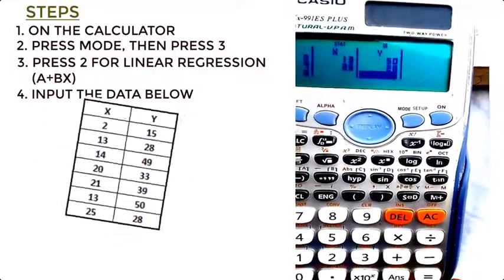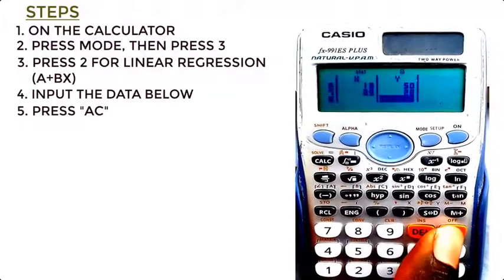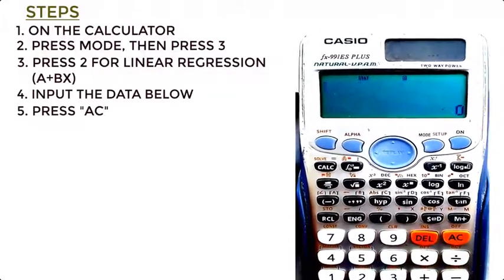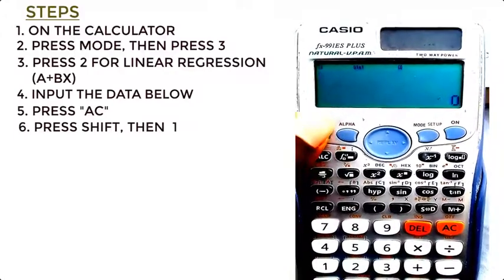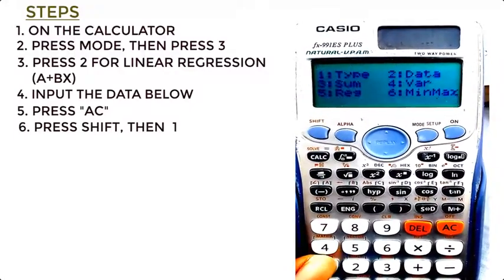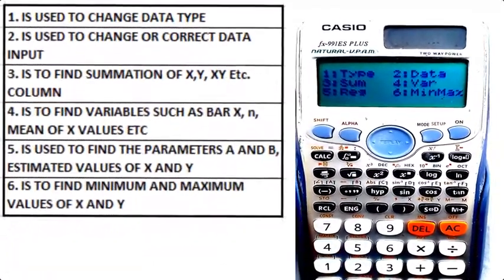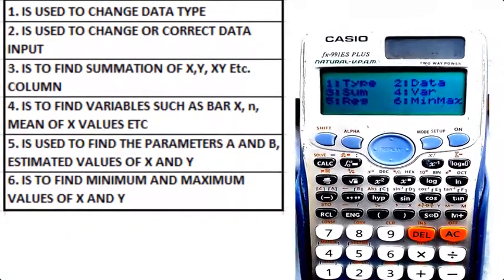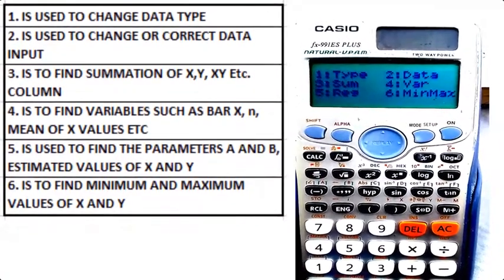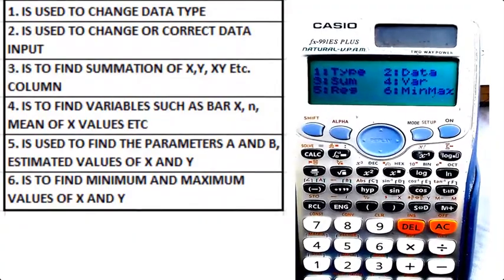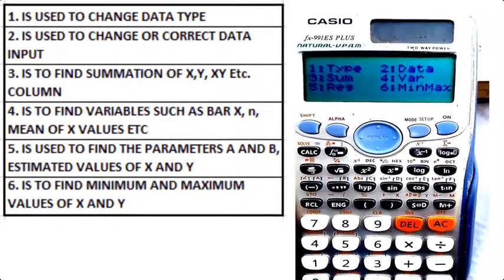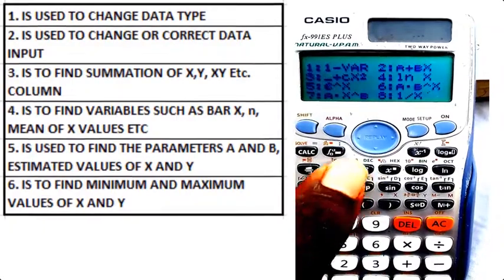So after you put in the data, then the next thing I do is to press AC. Now I'll press shift 1, so shift 1 will pop up these options. So I'm going to select 1 stands for type, so it depends on the type of data I want to use.